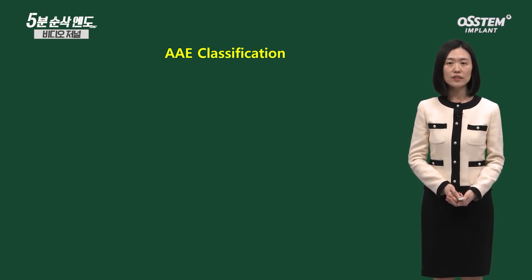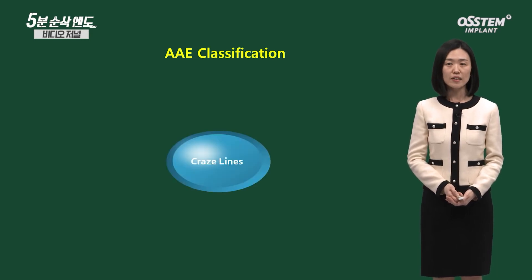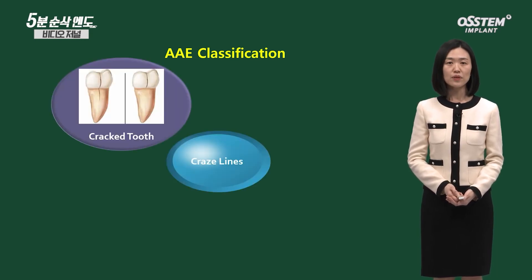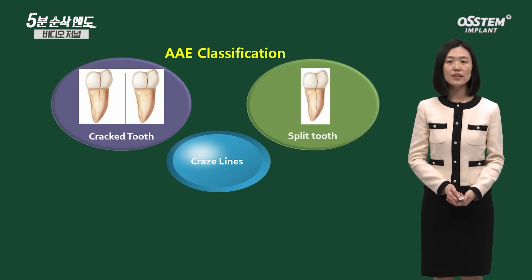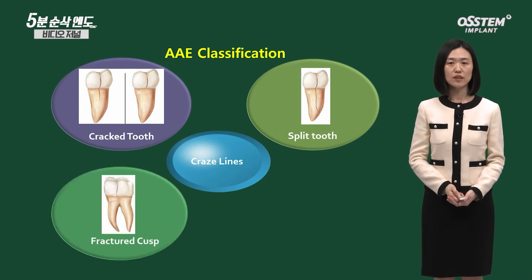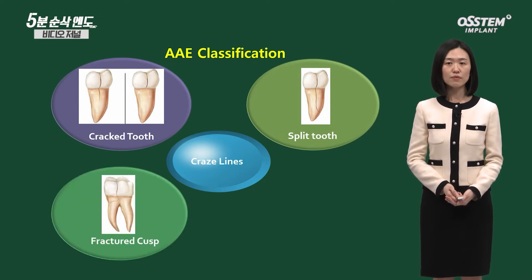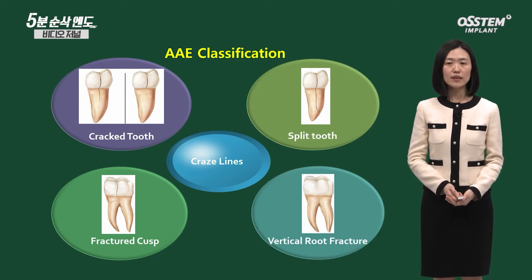Analysis was done following the AAE classification. First is the craze line, where the crack is limited to enamel and there's no pain. Then cracked tooth as we all know. Split tooth, where the incomplete fracture becomes complete. Fractured cusp, when the complete fracture occurs only on one cusp. And vertical root fracture, where the crack progresses from the apex of the root to the coronal surface.